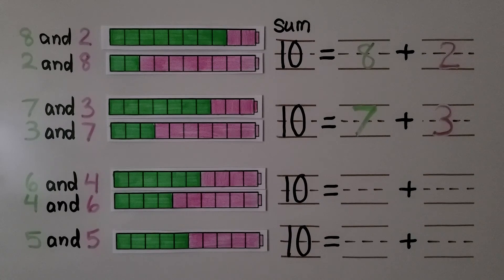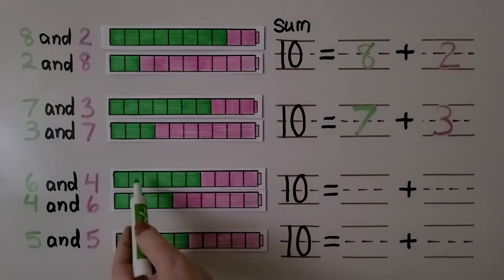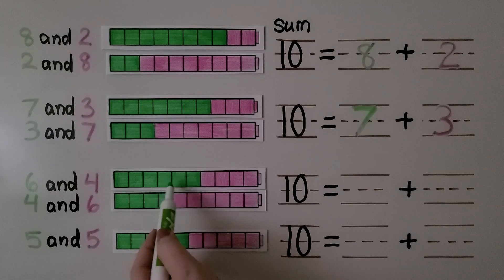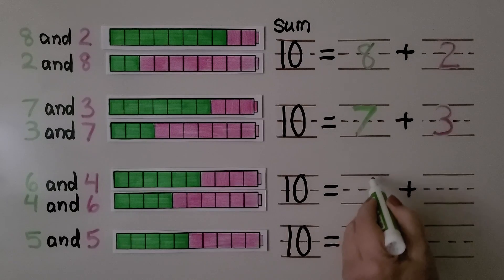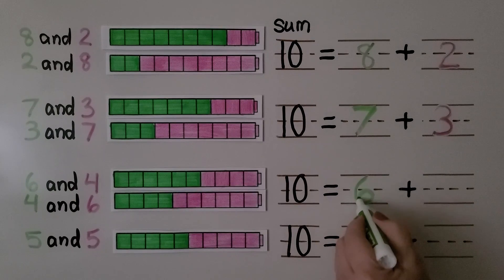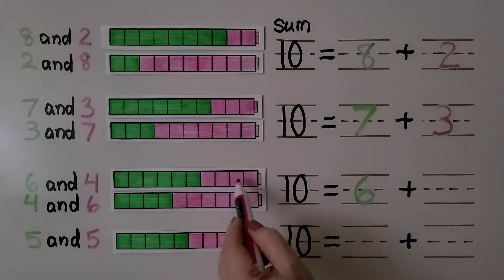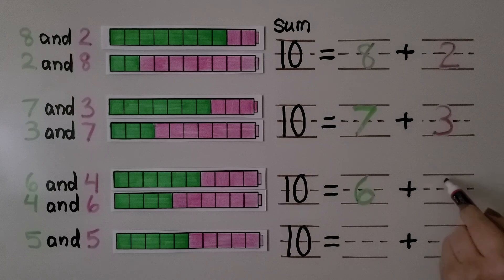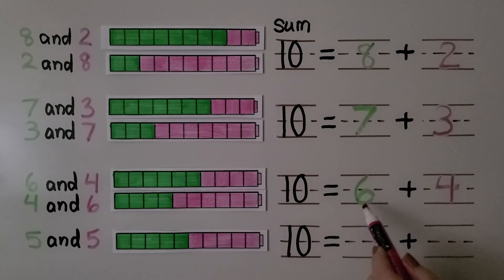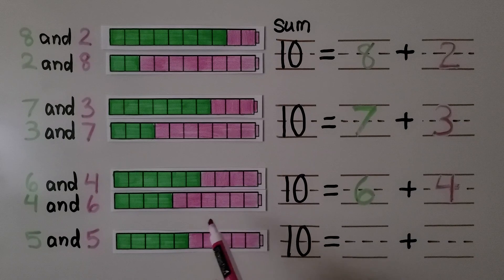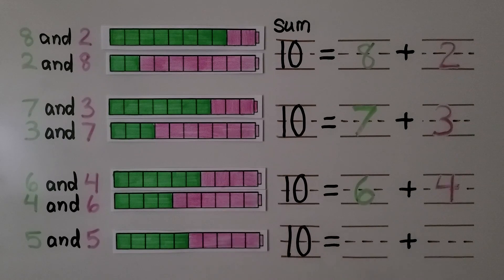We can count these cubes: there are one, two, three, four, five, six green cubes. And there are one, two, three, four pink cubes. We can write ten is equal to six plus four, or we can say it's equal to four plus six — it's still equal to ten.